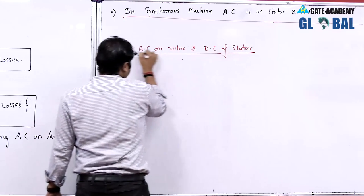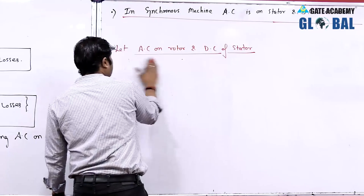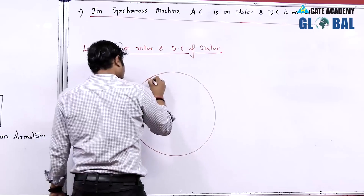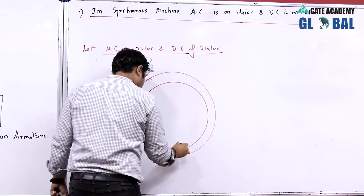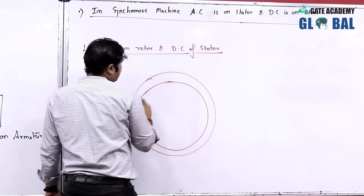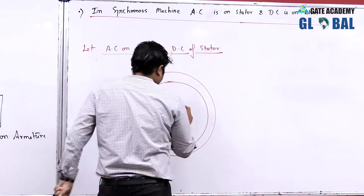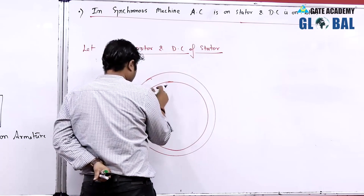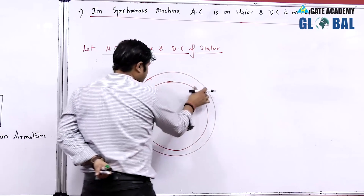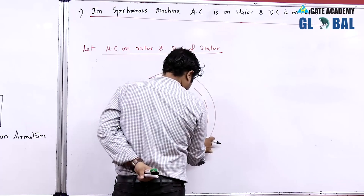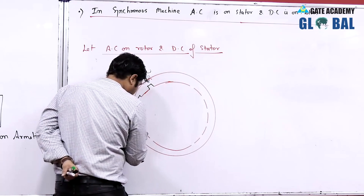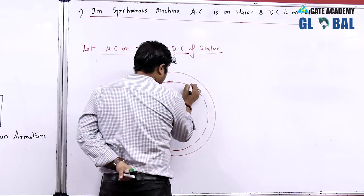For a moment, assume we place AC on the rotor and DC on the stator. If DC is on the stator, then DC current flows through the stator slots. We have the stator surface with stator slots in which we are going to place winding.